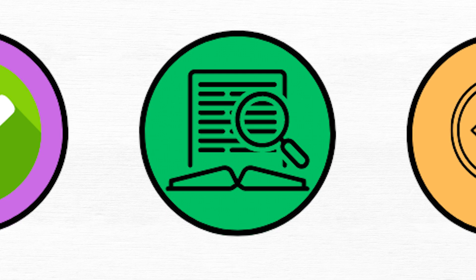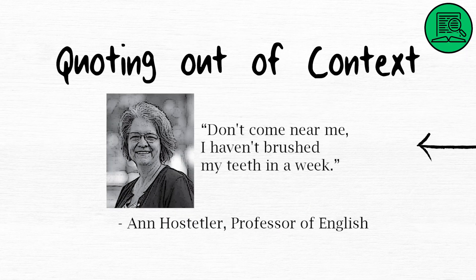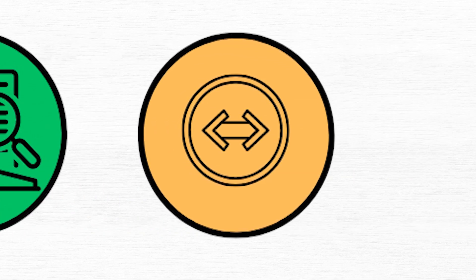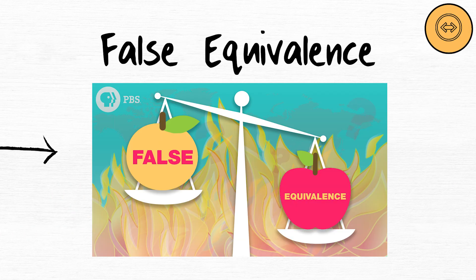Quoting out of context distorts a passage's meaning. False equivalence. The false equivalence fallacy assumes two subjects are alike based on flawed reasoning.